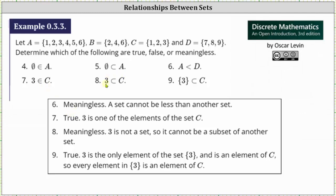Number eight, three is a proper subset of C. Only a set can be a proper subset or a subset of another set. An element cannot be a subset or proper subset of another set and therefore number eight is meaningless.